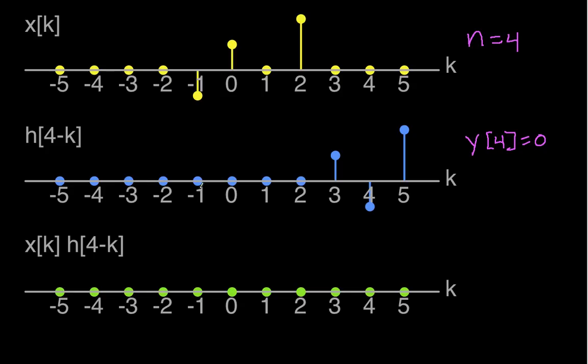And if n is larger, I keep shifting h to the right. Since h is zero from this point down to minus infinity, I'll never have, for larger n, I'll never have a location where the non-zero part of x and the non-zero part of h of n minus k overlap. And so for larger n, y of n is equal to zero for n greater than four.